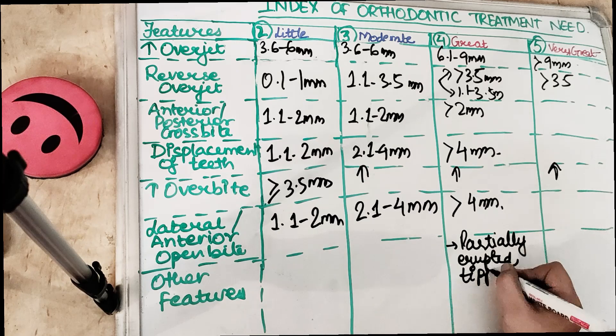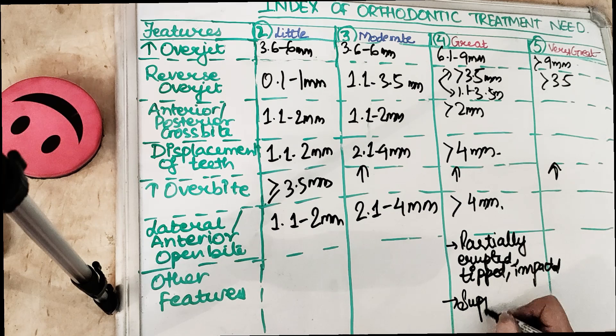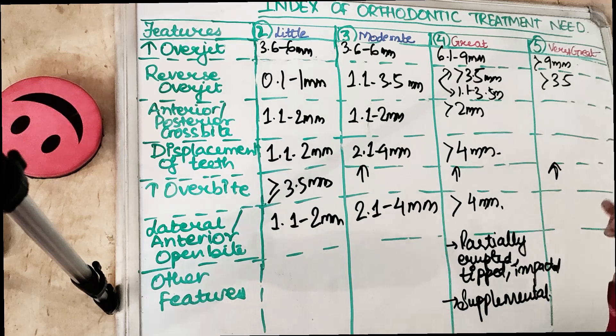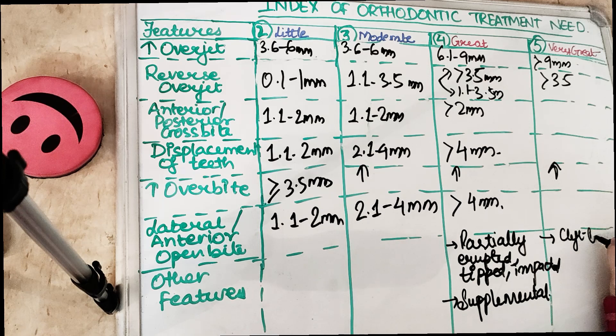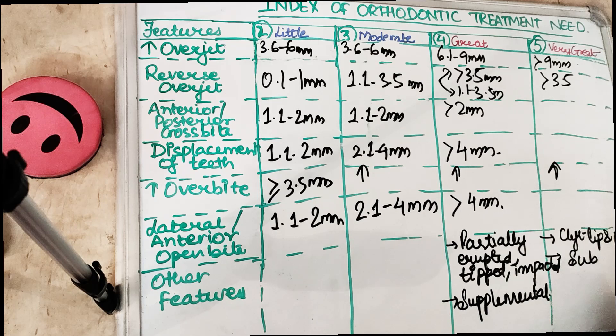Impacted or tipped teeth come under Grade 4 requirement for orthodontic treatment. If any supplemental teeth are present, that also comes under Grade 4. For Grade 5, if there is a cleft lip or cleft palate patient, that comes under a very great requirement for orthodontic treatment. Any submerged deciduous teeth present also comes under the Index of Orthodontic Treatment Need Grade 5.